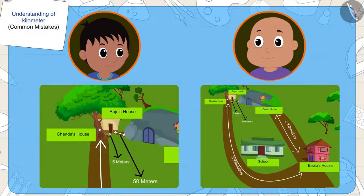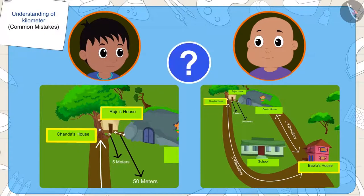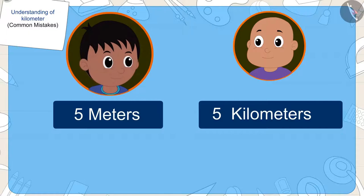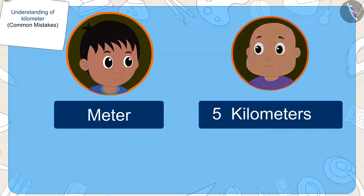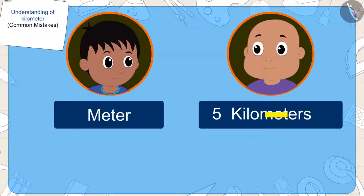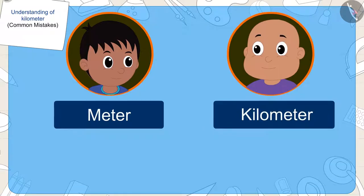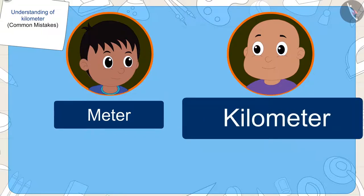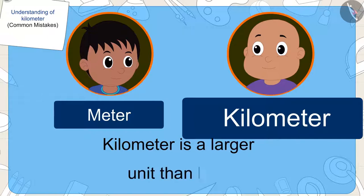Children, can you tell me? Is it right? Even though in the distance, numbers of Raju and Bablu's houses, five are the same. The distance unit of Raju's house is in meters. And the distance unit of Bablu's house is kilometers. And kids, you do know, which one of these two units is bigger, don't you? Yes! Kilometer is a larger unit than meter.